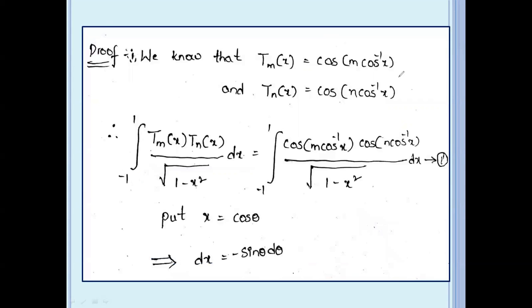First, we know that the Chebyshev polynomial of the first kind formula is: Tm(x) equal to cos(m cos⁻¹ x). And Tn(x) equal to cos(n cos⁻¹ x).